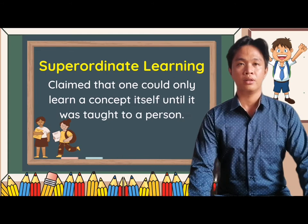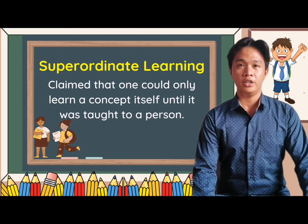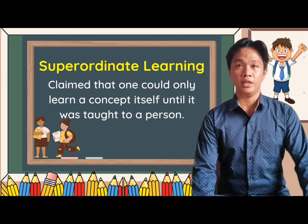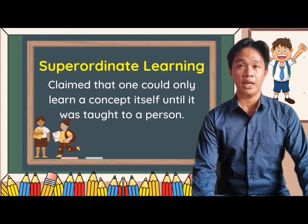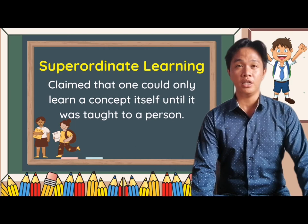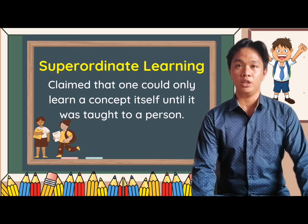Third is superordinate learning. It claims that one could only learn a concept itself until it was taught to a person. For example, students know numbers 0 to 3 but fail to realize these are all whole numbers until it was taught to them. Similarly, a child may be well acquainted with banana, mango, guava, etc., but did not know until it was taught to them that these were all examples of fruits. In this case, the child already knew many examples of the concept but did not know the concept itself until it was taught to them.